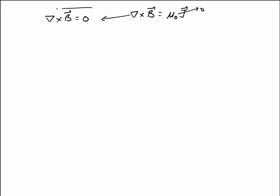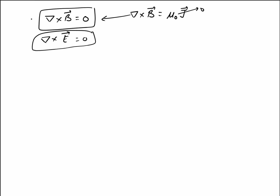This case is very similar to the equation of electric field in electrostatics, and we know that for a vector whose curl is equal to zero it can be represented by a scalar quantity — just like we represented the electric field by the gradient of the scalar quantity called the potential.